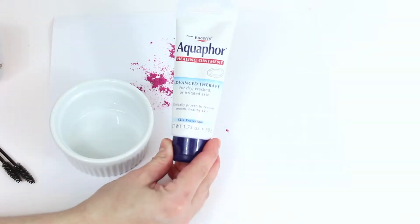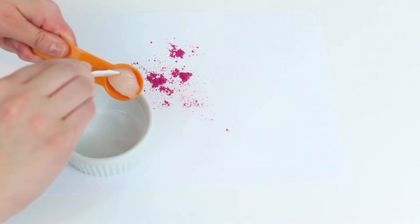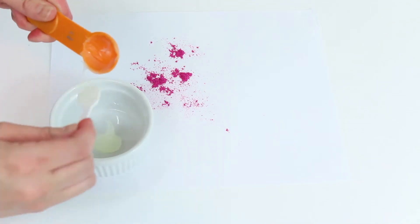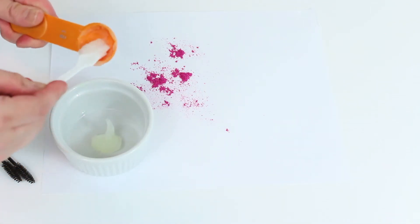Next, place about a teaspoon of Aquaphor in a small bowl and funnel the powder in. Mix the two ingredients together thoroughly. You may add more or less pigment depending on your desired final look.